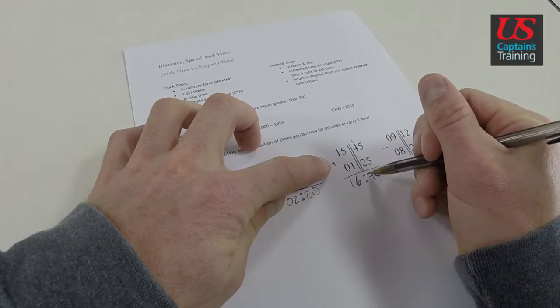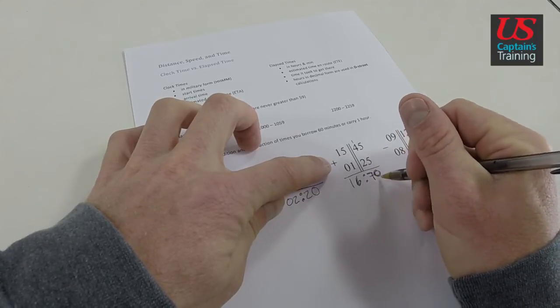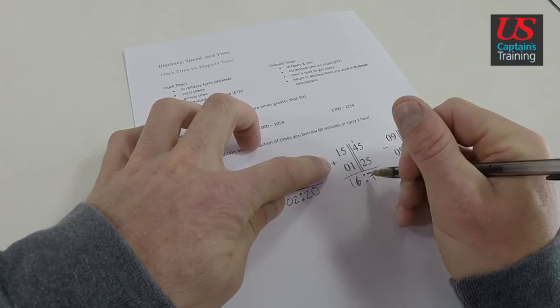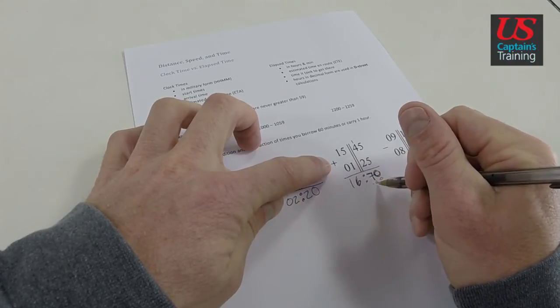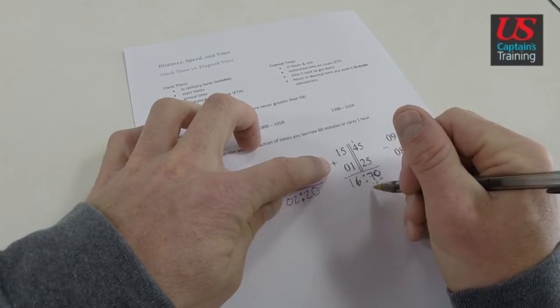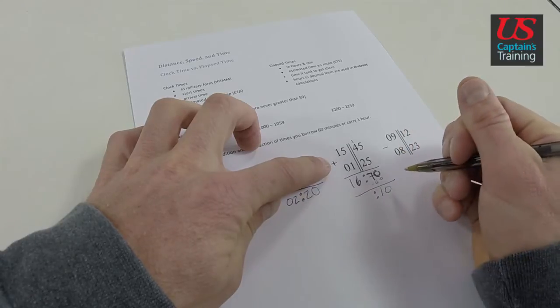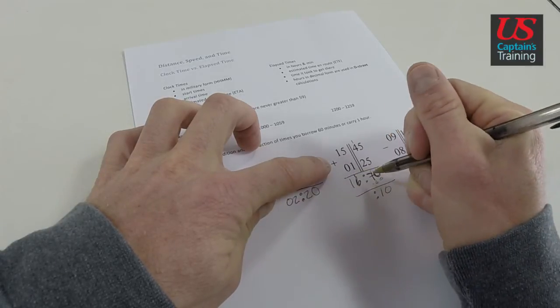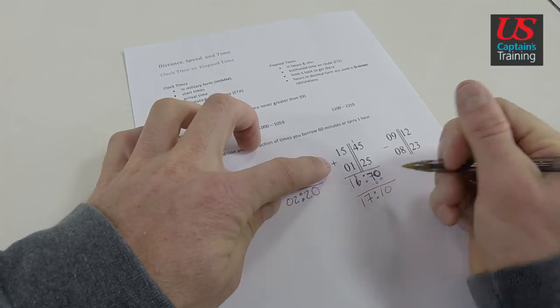So really right here, what we have is an hour and 10 minutes in this 70. So if we take 60 minutes out of there and make it an hour, right? So we subtract 60 from there. And that leaves us with 10 extra minutes and puts another hour on the 16, which leaves us 17 hours and 10 minutes.